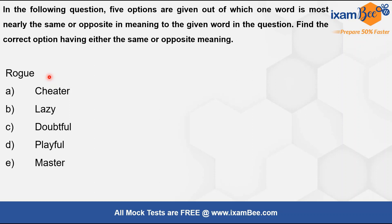Next word: 'rogue.' Rogue means an unprincipled person. Also, 'gone rogue' means someone has gone alone, separated from the group and behaving in an unusual, angry, or destructive way — like an animal separated from its herd. Since a rogue person is unprincipled and dishonest, their synonym is 'cheater.' So the correct answer is option A — cheater.